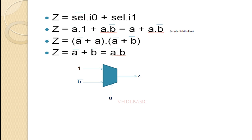We are going to derive this from the MUX expression. I need to substitute: instead of I0, I will substitute 1; instead of Select, it will be A; instead of I1, it will be B-bar. So referring to the expression, it becomes A-bar dot 1 plus A dot B-bar.